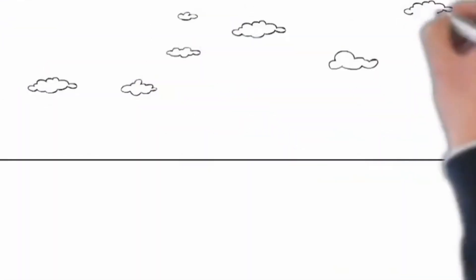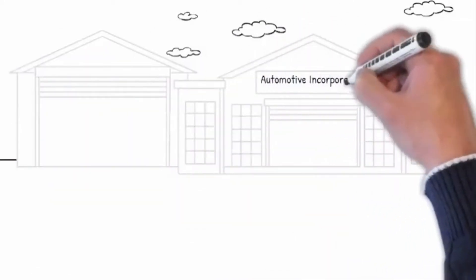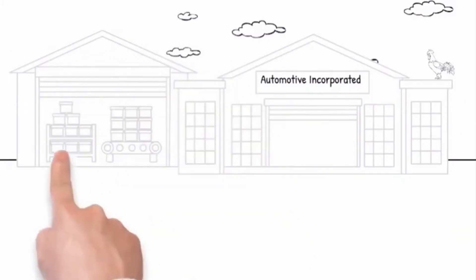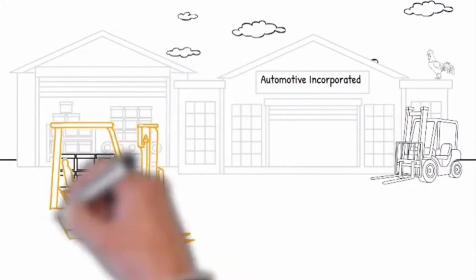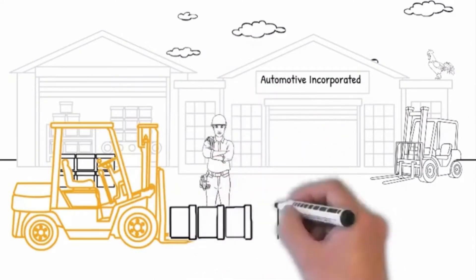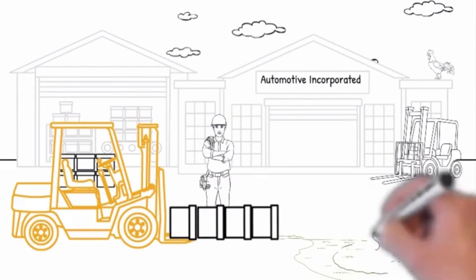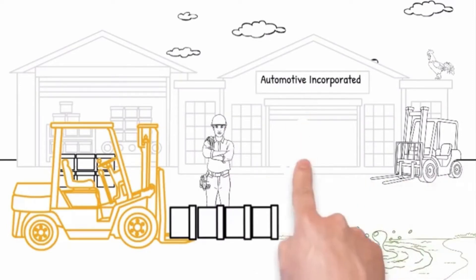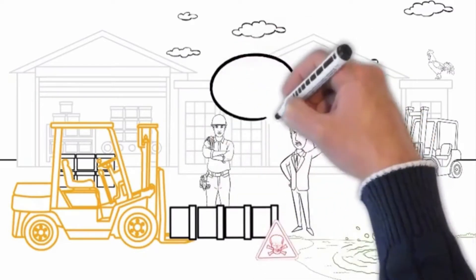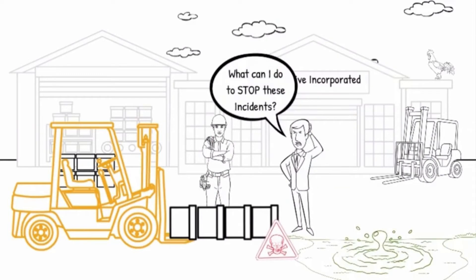Now we are going to observe a typical working day at Automotive Incorporated Warehouse. All activity seems to be running smoothly until the forklift driver stopped too quickly, causing the unsecured load to capsize on the ground and spilling the toxic chemicals. Fortunately the on-site construction worker moved out of the way just in time and avoided being injured. Now the manager realized that he needs to implement controls to prevent similar incidents from happening again.